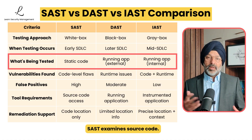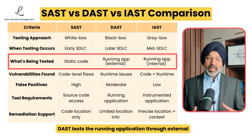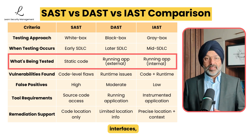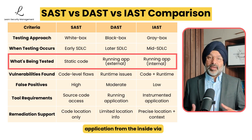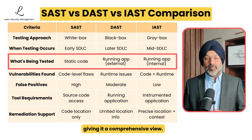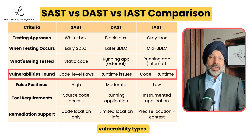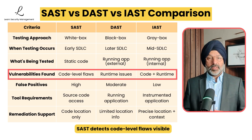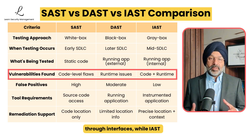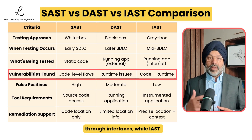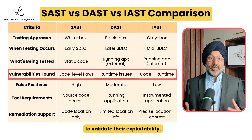SAST examines source code, bytecode, or binaries without execution. DAST tests the running application through external interfaces. While IAST examines the running application from the inside via instrumentation, giving it a comprehensive view. Each methodology excels at finding different vulnerability types: SAST detects code-level flaws visible in source code, DAST identifies runtime vulnerabilities accessible through interfaces, while IAST can find both types with full execution context to validate their exploitability.